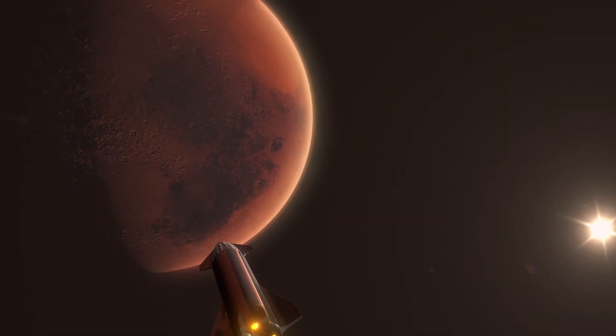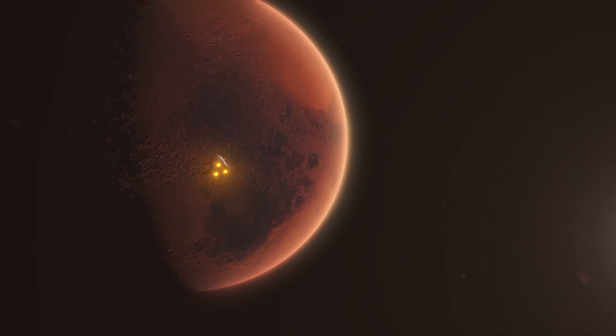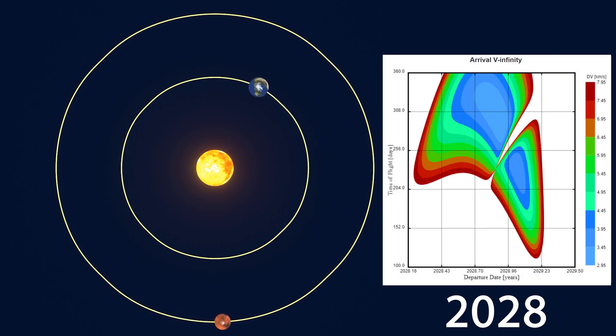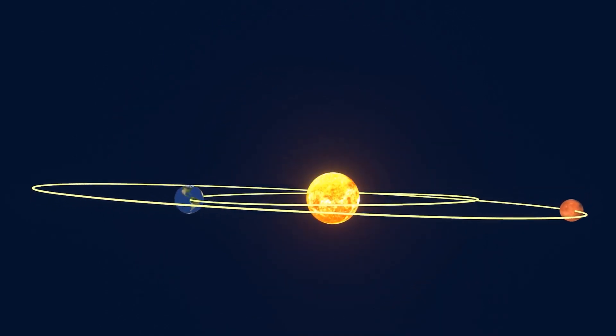The timeframes and Delta V figures used in this video are averages for the purpose of illustrating the basic differences between mission architectures. In reality, the characteristics of a journey to Mars are slightly different for every launch window, since the orbits of Earth and Mars are different in their eccentricities and inclinations.